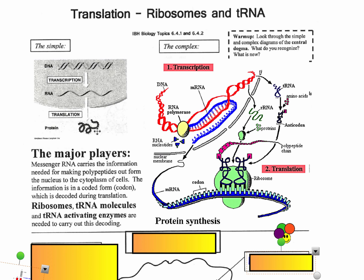The ribosome converts that message into something useful — a protein — which could be an enzyme, an antibody, a hormone, or any other type of protein. A protein is just a sequence of amino acids. Basically this code spells out which amino acids we need to bring together and put in the right order to create a protein with a specific function.